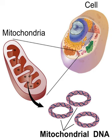In most multicellular organisms, mtDNA is inherited from the mother — maternally inherited. Mechanisms for this include simple dilution (an egg contains on average 200,000 mtDNA molecules, whereas a healthy human sperm has been reported to contain on average five molecules), degradation of sperm mtDNA in the male genital tract and in the fertilized egg, and, at least in a few organisms, failure of sperm mtDNA to enter the egg.